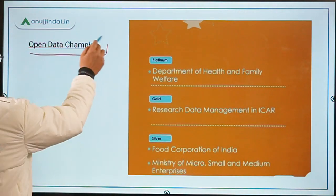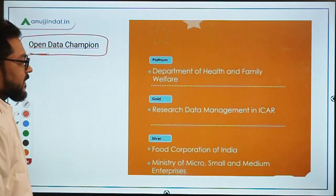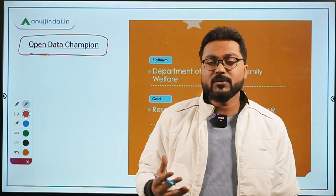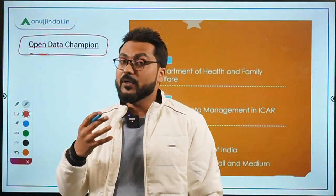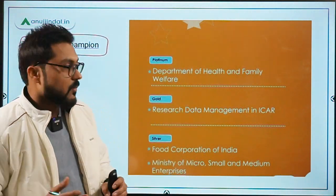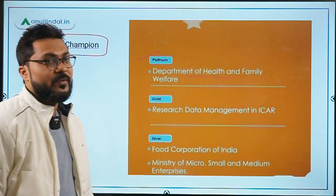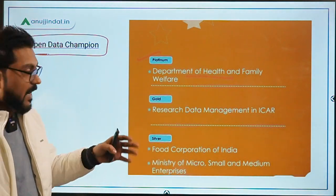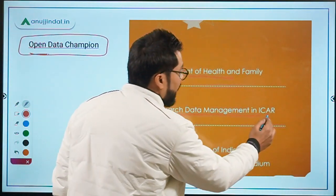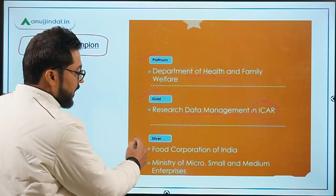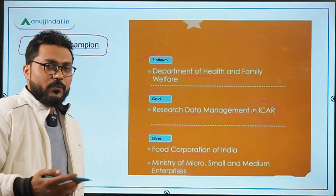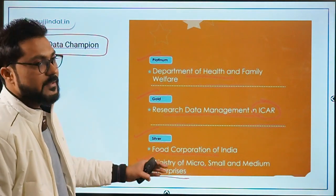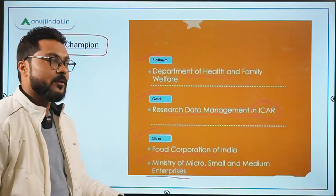The Open Data Champion category recognizes organizations and ministries working in data management. Platinum went to the Department of Health and Family Welfare for its work during the pandemic. Gold went to Research Data Management in ICAR. Silver went to FCI for food supply management and to the Ministry of Micro, Small and Medium Enterprises for digitization of the MSME sector.